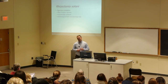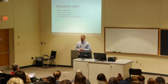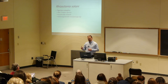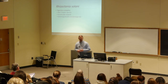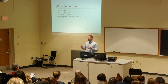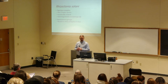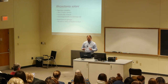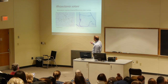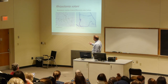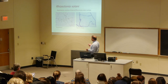Rhizoctonia solani is a species complex — what you might call cryptic species in animals: species that are genetically isolated but can't be distinguished morphologically. There are no good morphological characters to distinguish the species, so they've been divided into anastomosis groups based on the ability of hyphae to fuse. Micrographs show hyphae fusing: perfect fusion creates a link between hyphae and happens between genetically identical or clonal isolates.